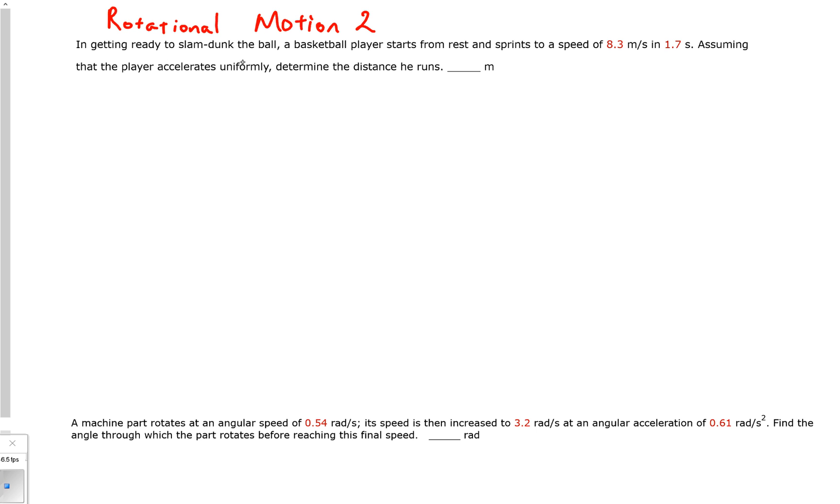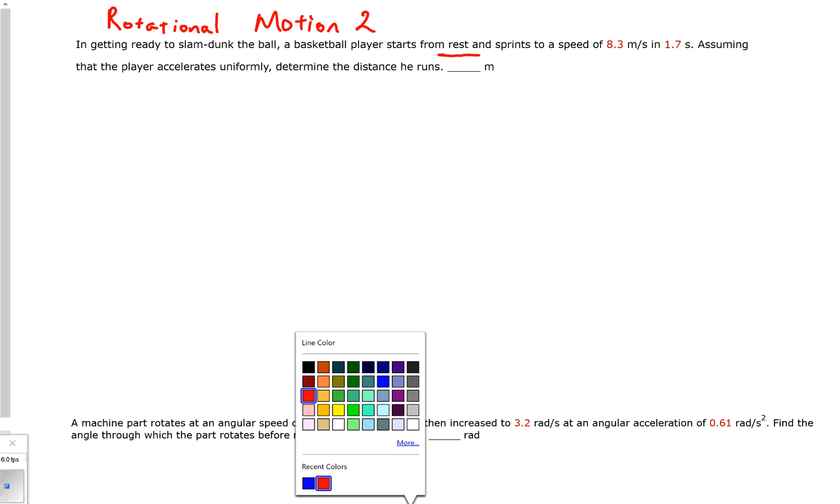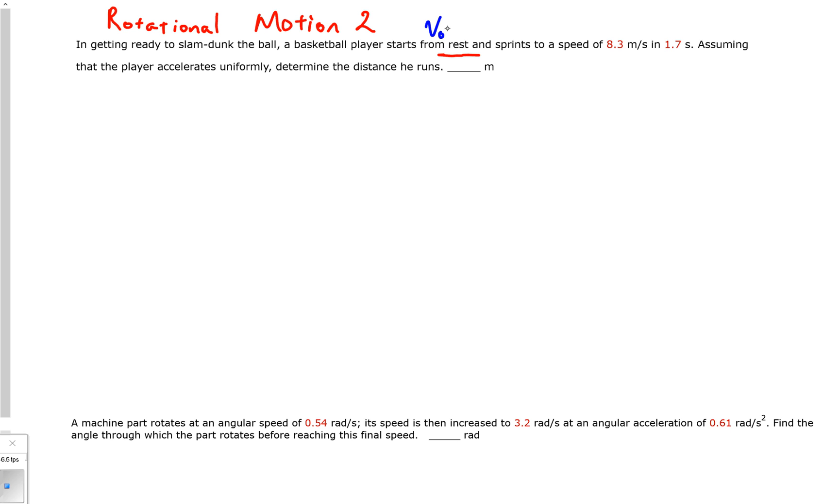So check it out. In getting ready to slam dunk a basketball, a basketball player starts from rest. What is the significance of starting from rest? What's that telling us? That's telling us that our velocity initial, v₀, is zero meters per second. He reaches a speed of 8.3 meters per second, so there's our velocity final, in 1.7 seconds, and there is our time. Assuming the player accelerates uniformly, determine the distance that he is able to run.